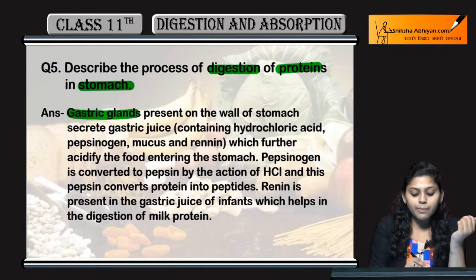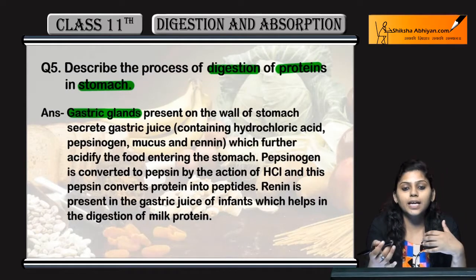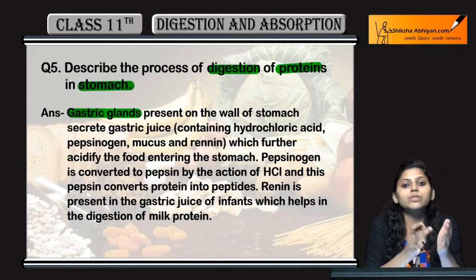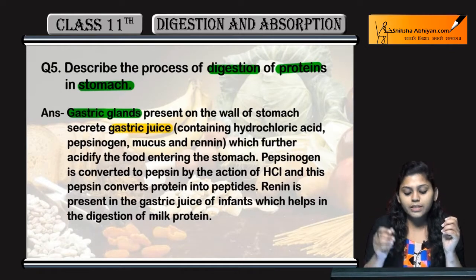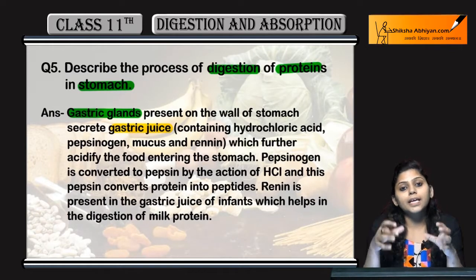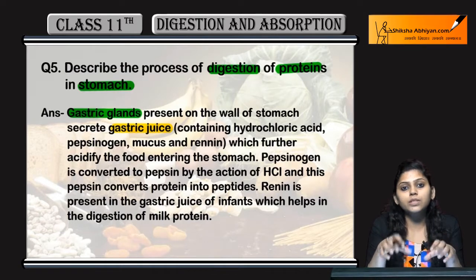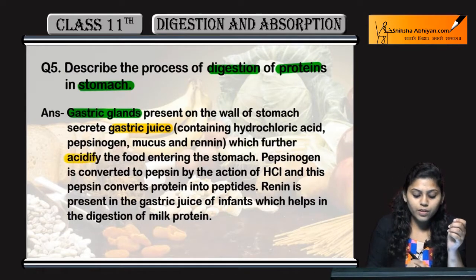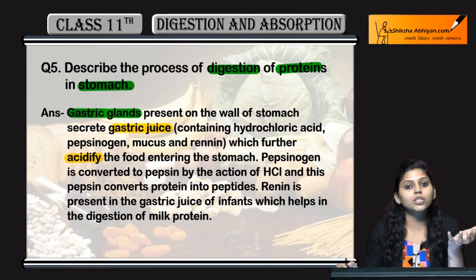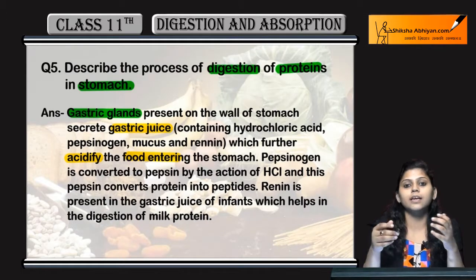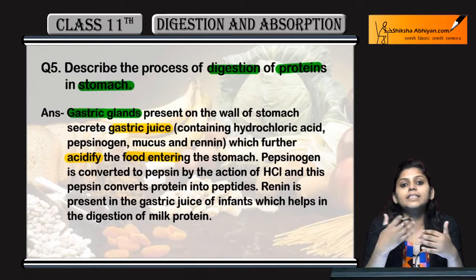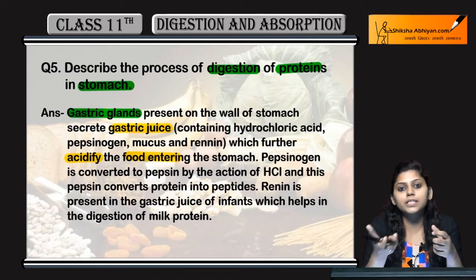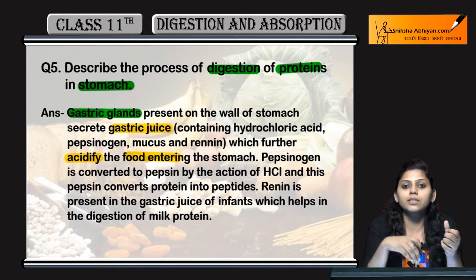First of all, stomach mein kya present hota hai? Gastric glands present hota hai. Woh gastric glands gastric juices secrete kertai hai. Gastric juices acidic nature ke hota hai, that's why they acidify the food entering the stomach.